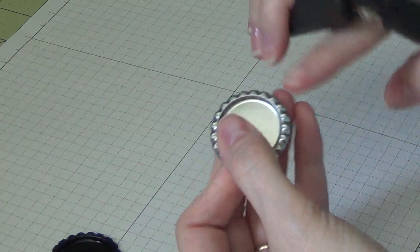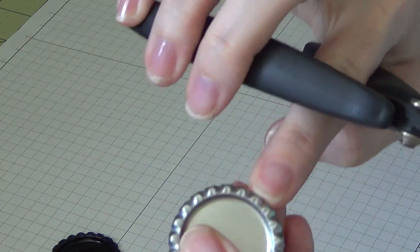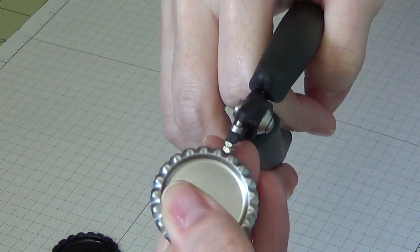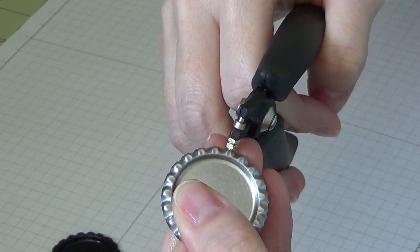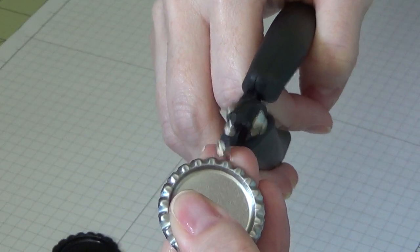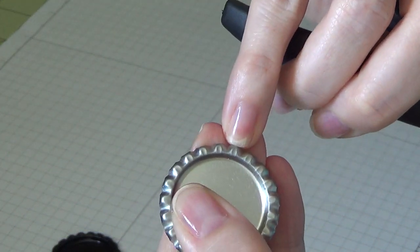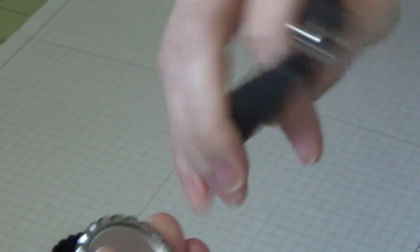What I do is place this in one of the little divots of the bottle cap. You don't want to try to punch in between here—you want to punch where the little crease is right here. That's where you want to punch.